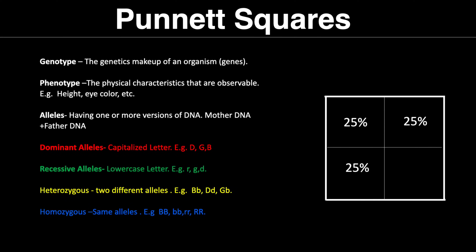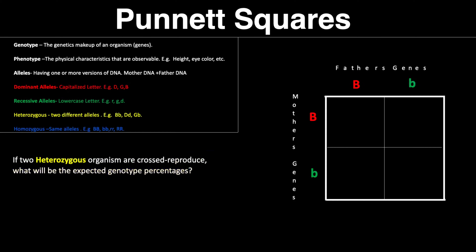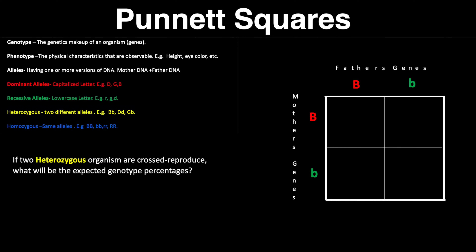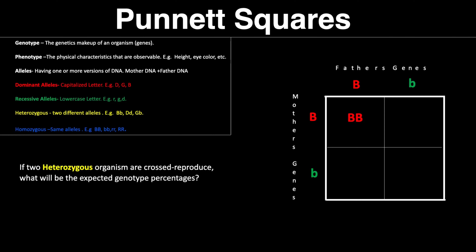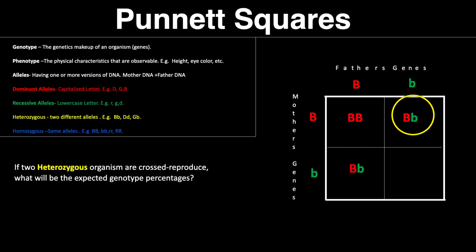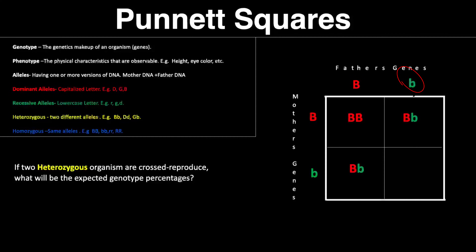Each block within the Punnett square is worth 25%. The question says: if two heterozygous organisms are cross-reproduced, what will be the expected genotype percentages? Because we have two heterozygous organisms — meaning two different alleles, represented by a capital letter and a lowercase letter — we have a heterozygous mom and heterozygous dad. We take the first gene from dad and the second gene from mom, filling in each square by crossing and adding.